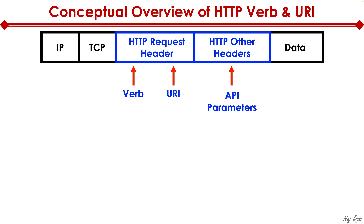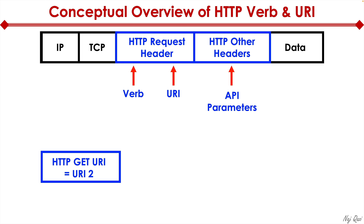Typically the HTTP verbs we just looked at are contained within the HTTP request header. Also, the URI or the object is also contained within the HTTP request header. However, the API parameters — whatever we're trying to update, delete, or any type of parameters we pass through the API — are contained within the HTTP other headers. For example, a request called HTTP GET URI: get means to read, so here we're saying HTTP, go ahead and read me an object, and that object is URI2.